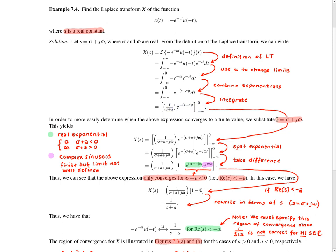Where σ is the real part of s and ω is the imaginary part of s. Performing this substitution, we end up with the next line. We can then split the exponential into a real exponential and a complex sinusoid, and take the difference, which leads to the next line.